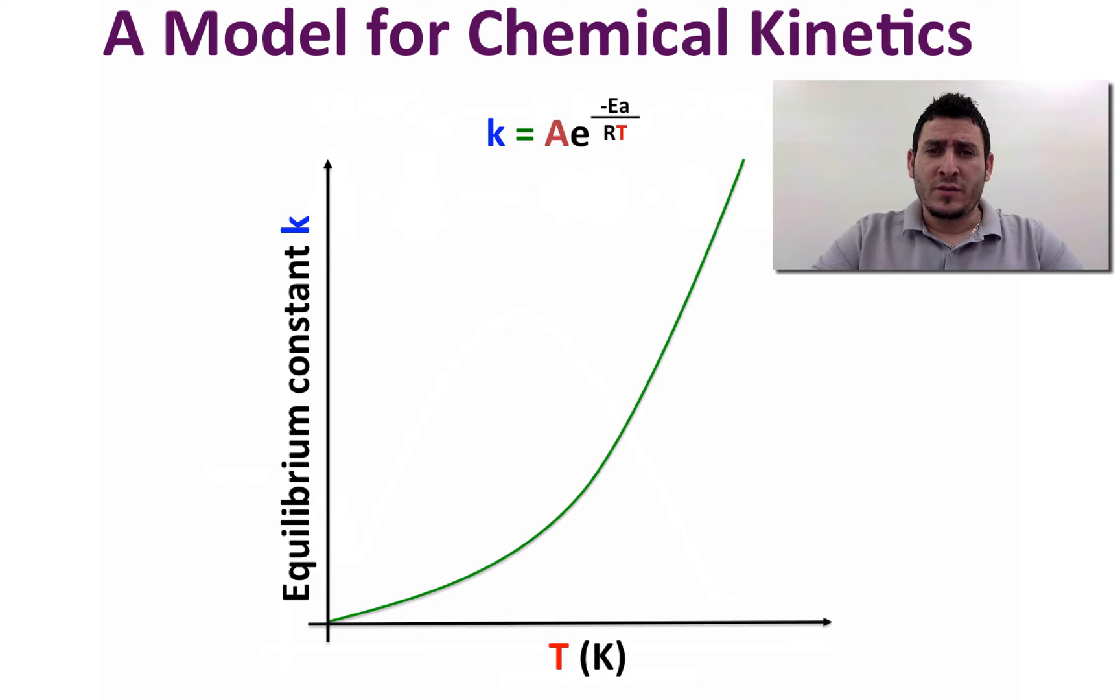However, rate of collision is greater than the rate of the reaction. Therefore, not every collision results in a reaction. This can be explained if we assume that the reaction has a threshold energy called activation energy. The energy of the collision must be greater than the activation energy for the reaction to occur.